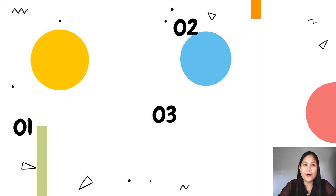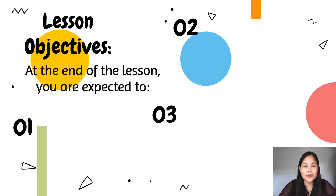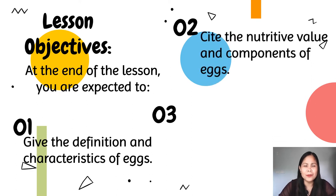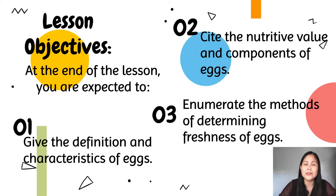For our lesson objectives for this day, at the end of the lesson you are expected to: first, give the definition and characteristics of eggs; cite the nutritive value and components of eggs, the nutrient content that we can get from eggs; and enumerate the methods of determining freshness of eggs.